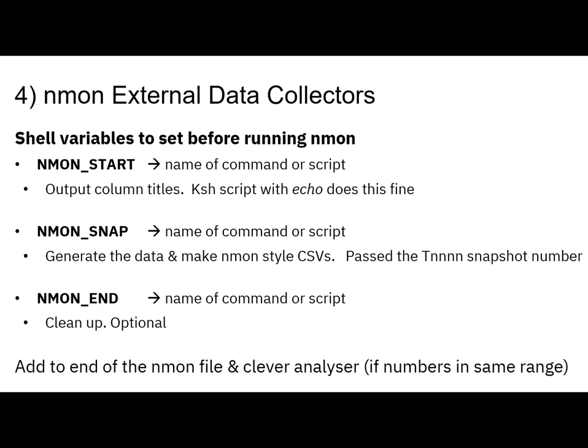Then the next one is called N1 snap. So every time we do a snapshot, N1 will call this command or script. It needs to generate the data — maybe from a database, or from an application looking at transactions complete, or whatever it is. Then it has to reformat that data into N1 style. It's passed that timestamp number, the T0001, T0002, for the current snap, so you can add that to the output. And you'll need to append that to the same file as the N1 start.